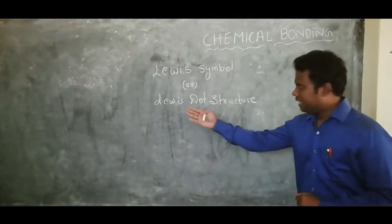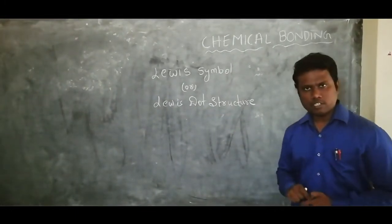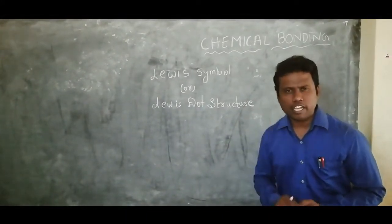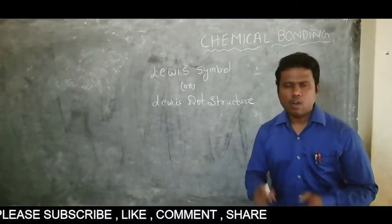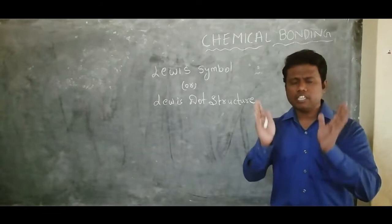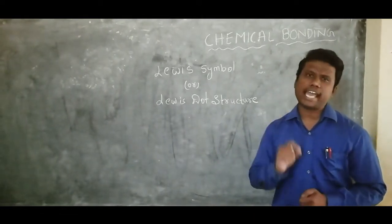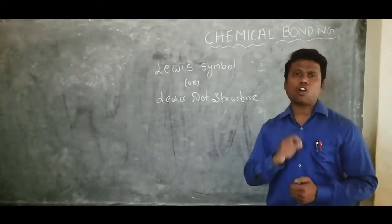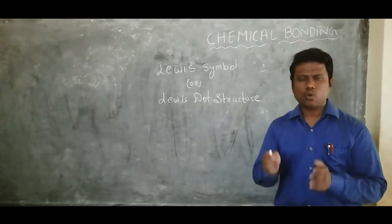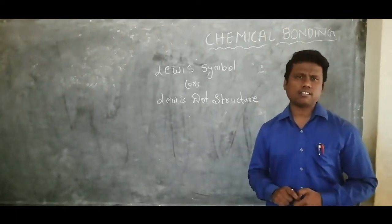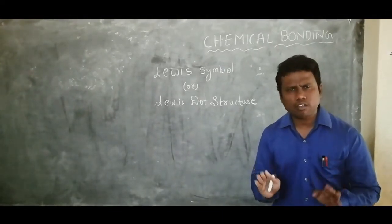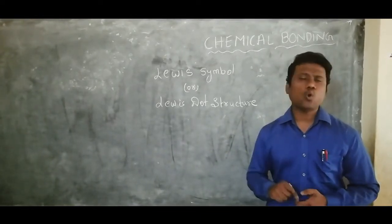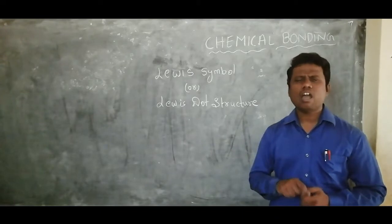We observe in the periodic table elements are arranged according to their electronic configuration. Once we observe the elements in our periodic table, the noble gases are in the 18th group or zero group. We are calling them as noble gases. We observe that noble gas elements do not react with any other elements to form any chemical bonding.